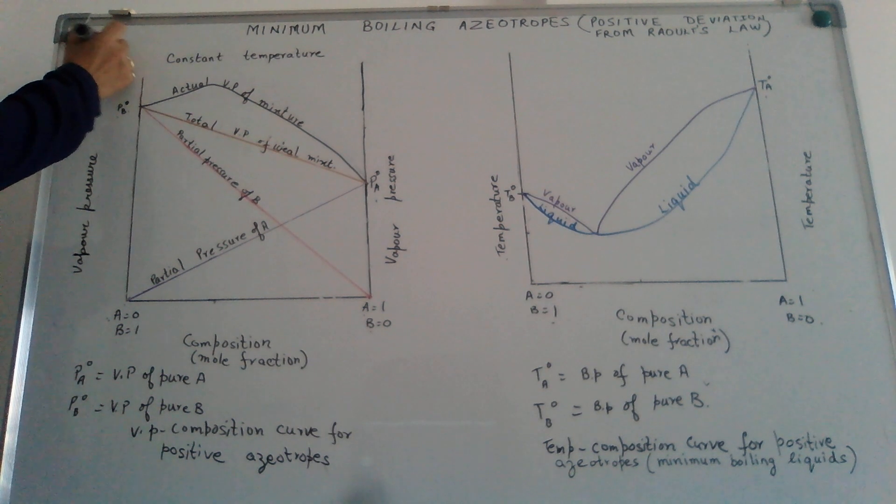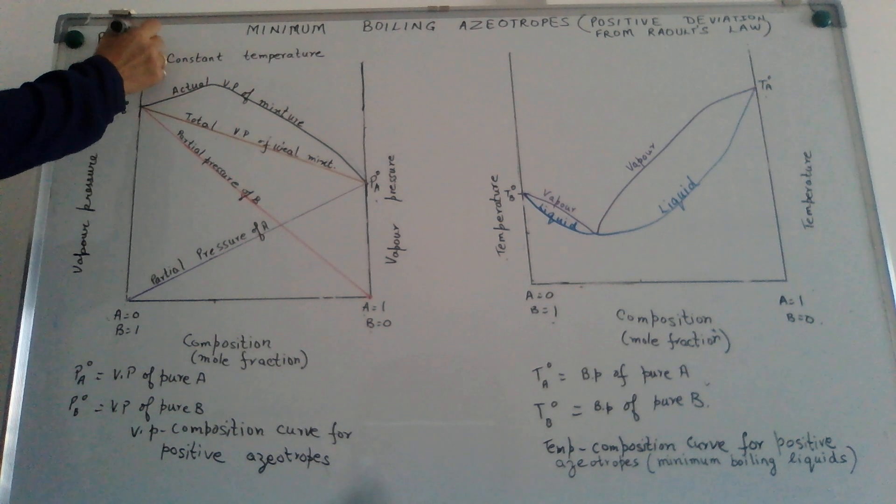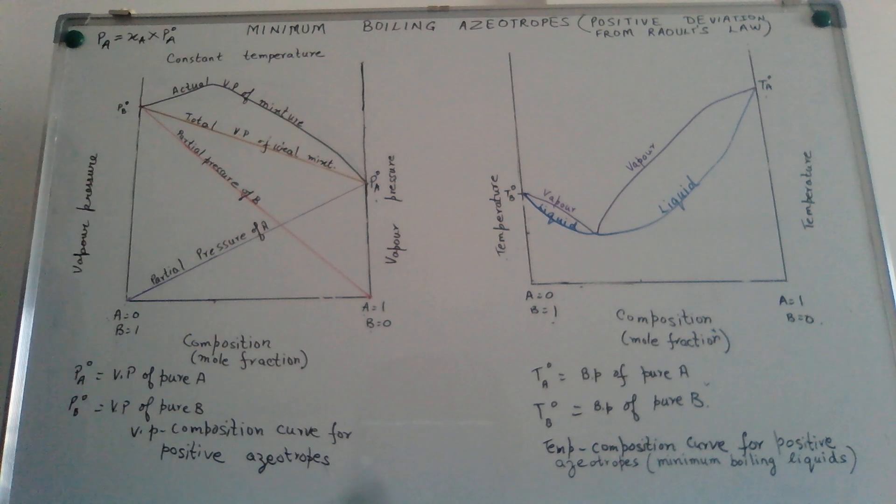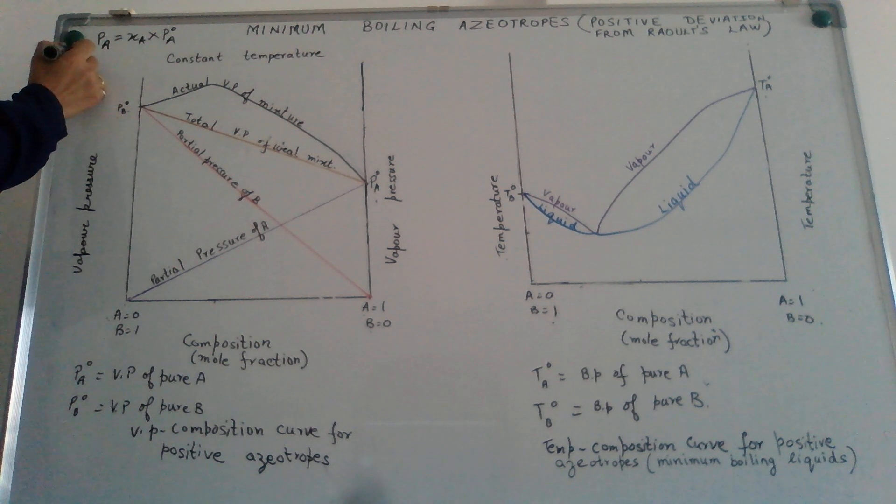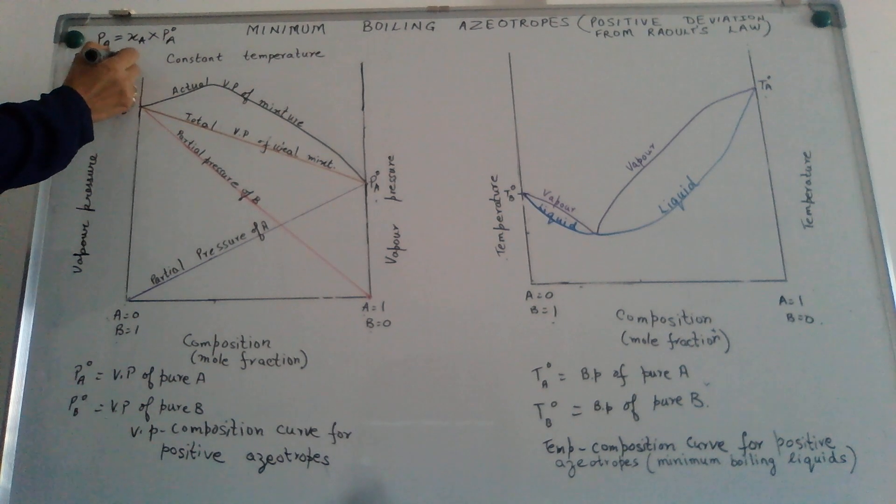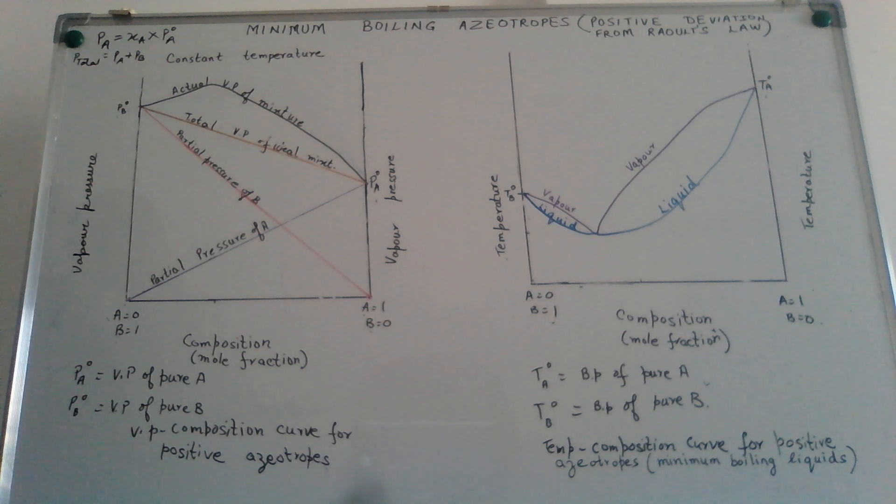The vapor pressure of a component in a solution is equal to its mole fraction multiplied by the vapor pressure of the pure component and the total vapor pressure is a sum of the vapor pressure of each of the individual components. That is what is our Raoult's law.